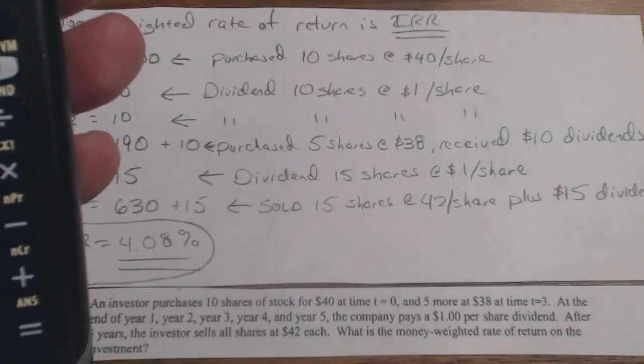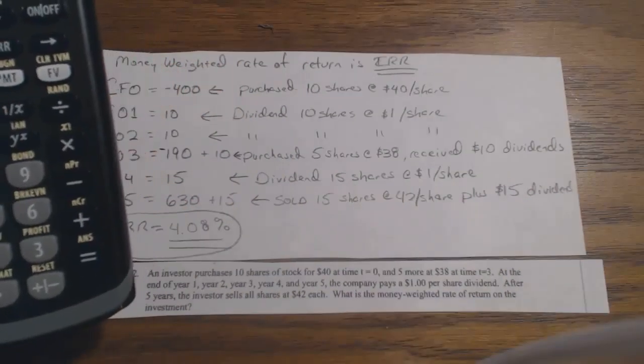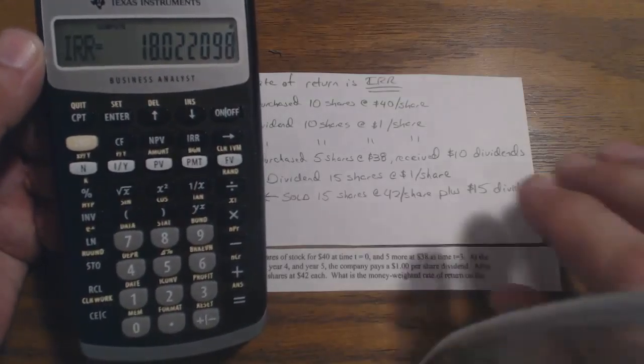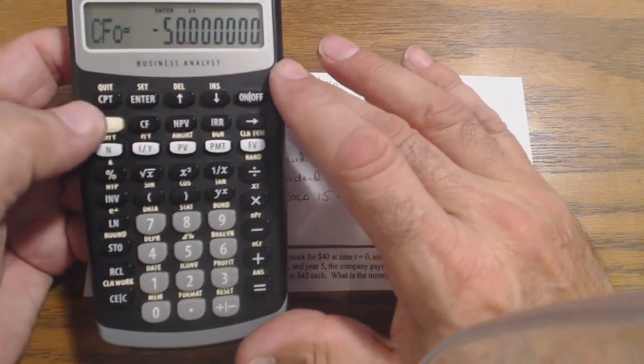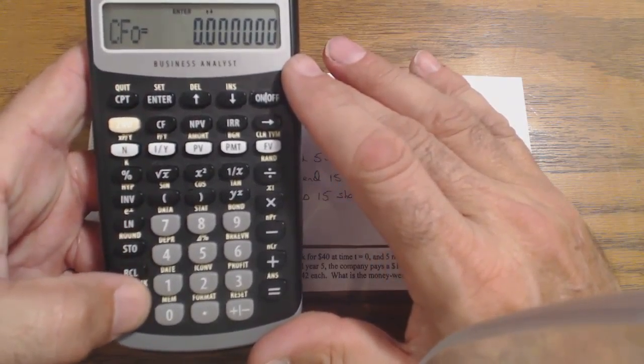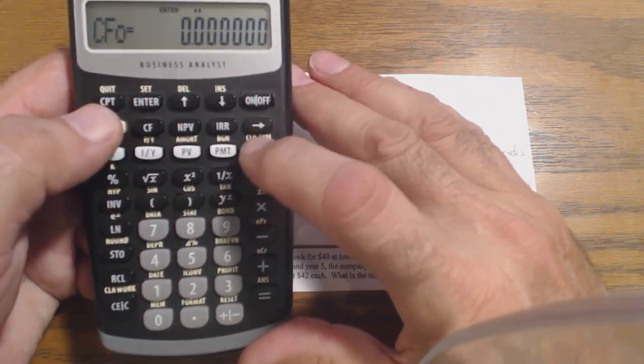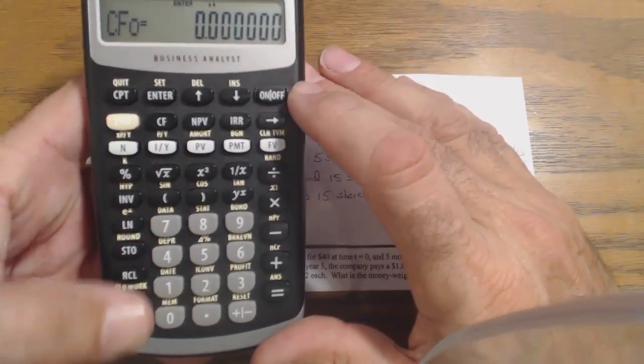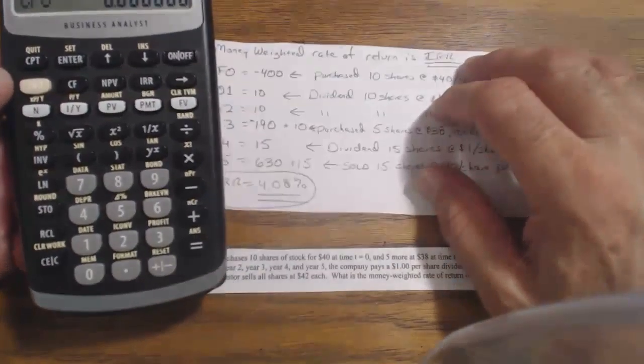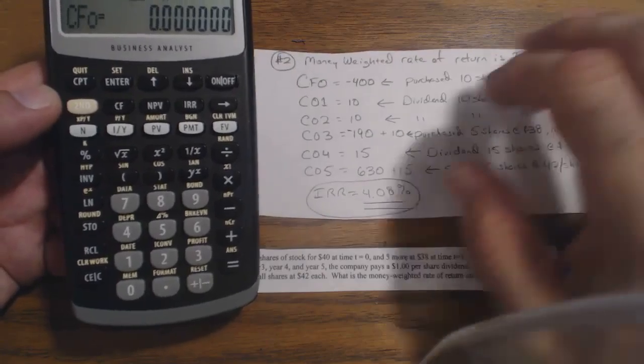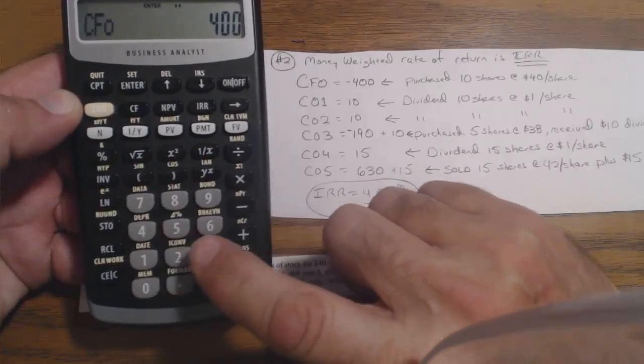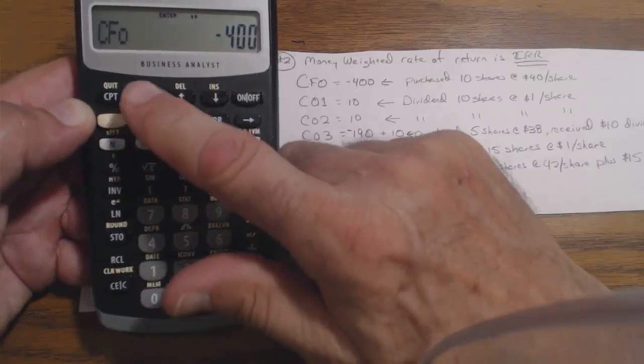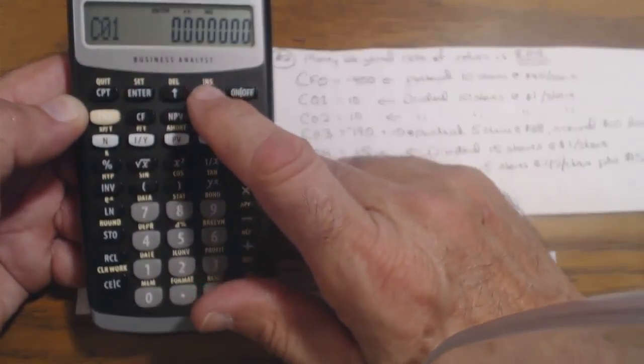So let's show on the calculator how we do that real quick. Pretty simple. Now I've got the old numbers on here. So second CF, second clear, and second FV, and I just go second clear again always. Okay. So we know that in CF0, we have $400 as an outflow, because that's what we pay. Remember, that's a negative sign, and you've got to hit enter. Key down.